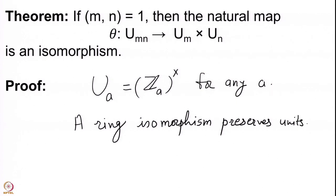Since a ring isomorphism preserves units, this very simple fact gives us that when you restrict the map θ to the group of units U(mn), you get a group isomorphism.